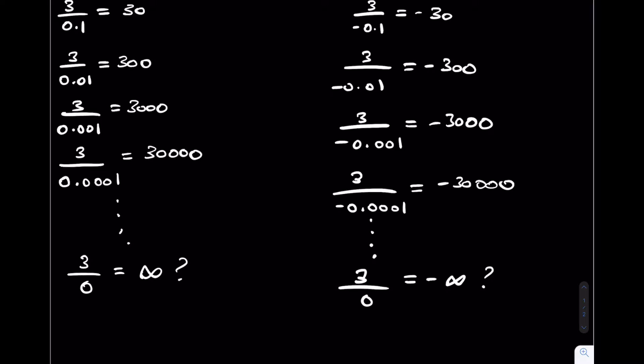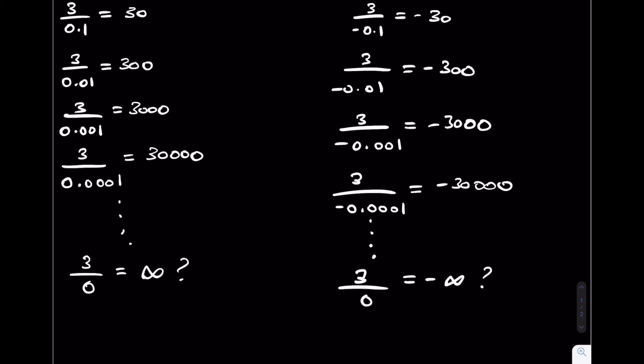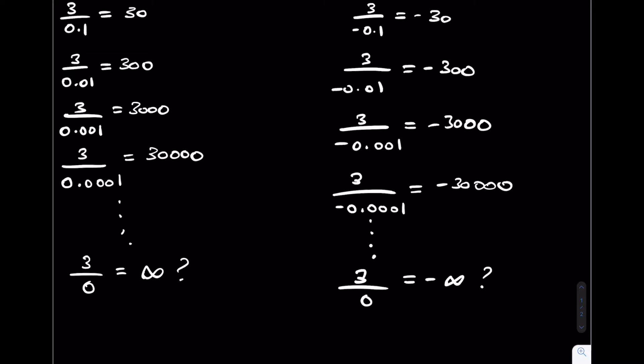There is a strong argument that 3 divided by 0 is equal to infinity and an equally strong argument that 3 divided by 0 is equal to negative infinity. But infinity and negative infinity are two different numbers. So there isn't an exact answer when you divide a number by 0. Hence, a number divided by 0 is undefined.